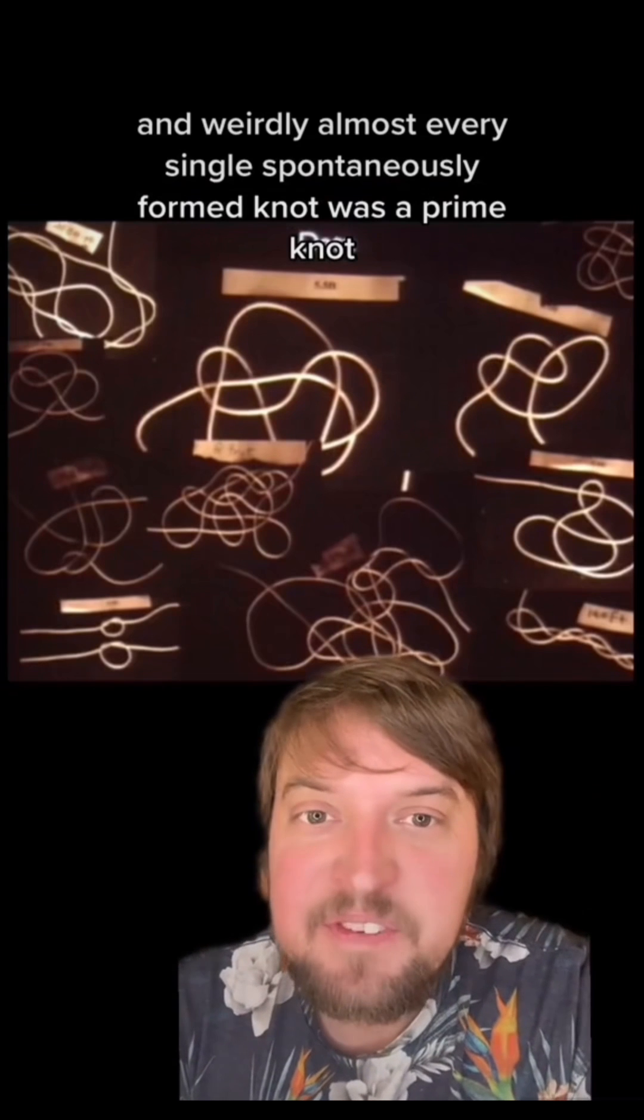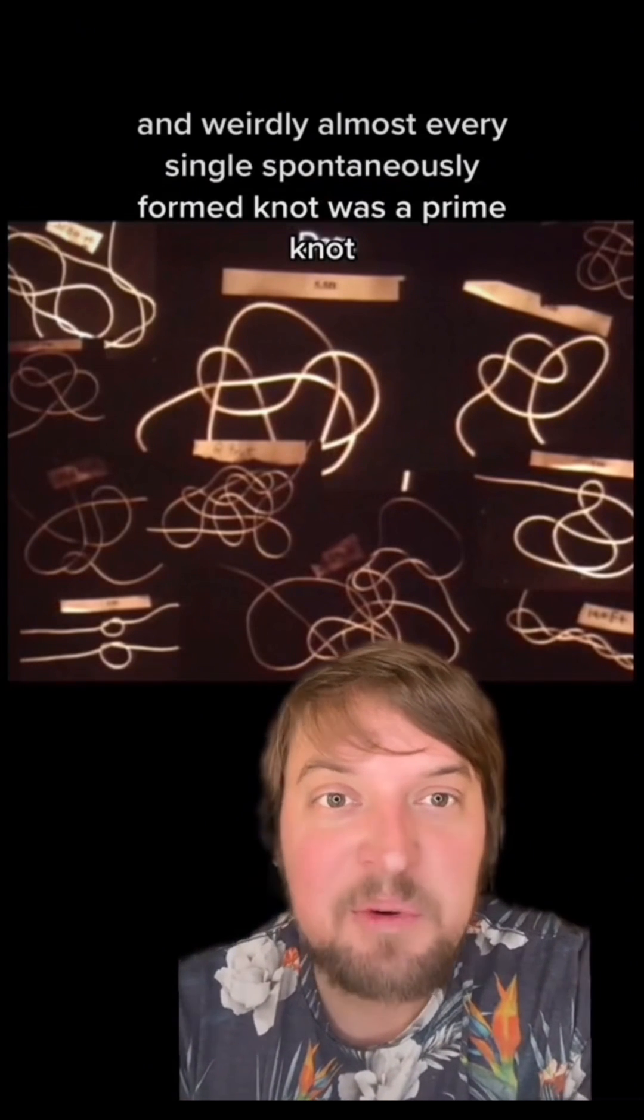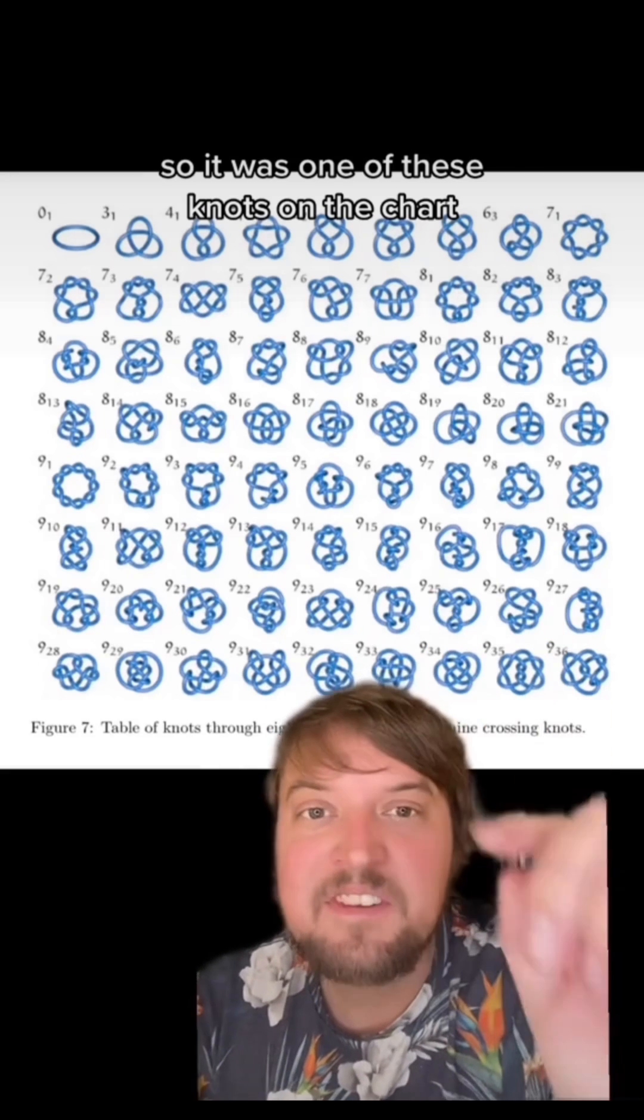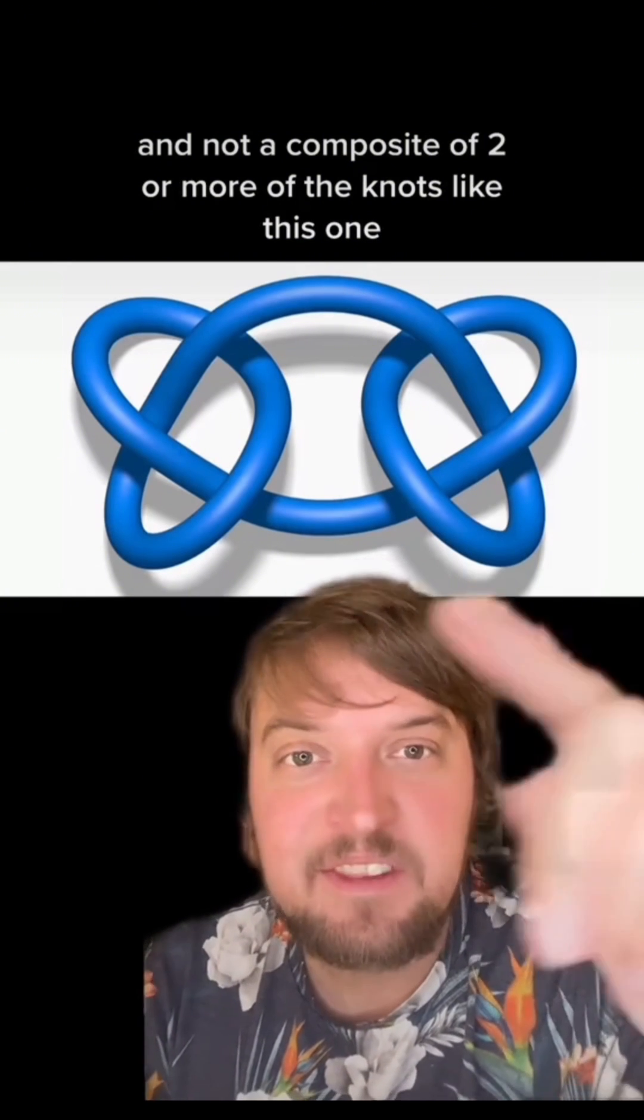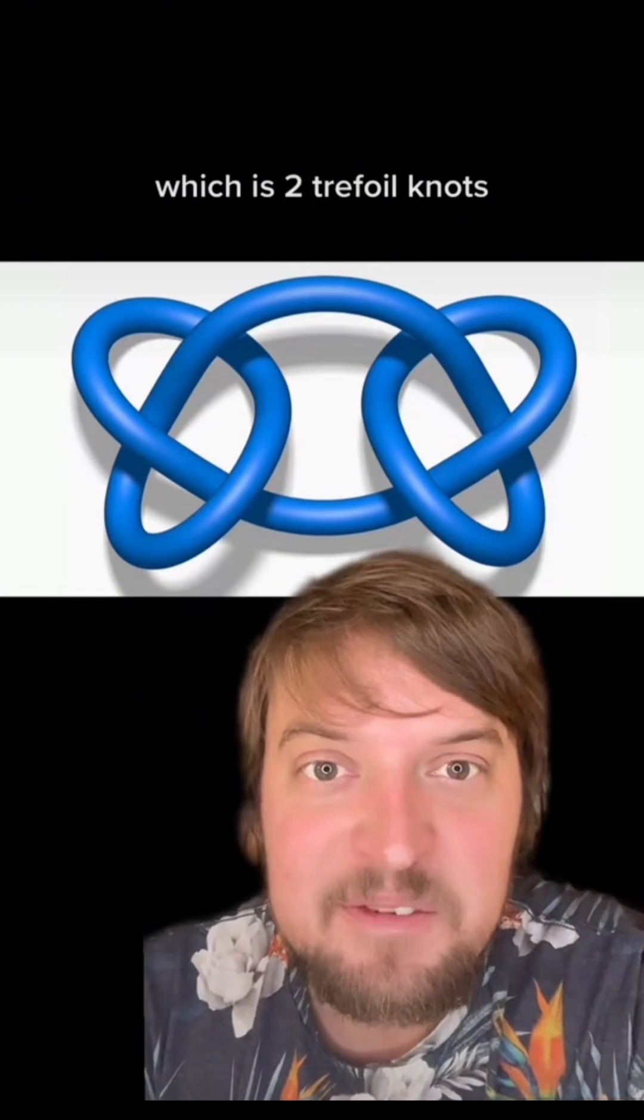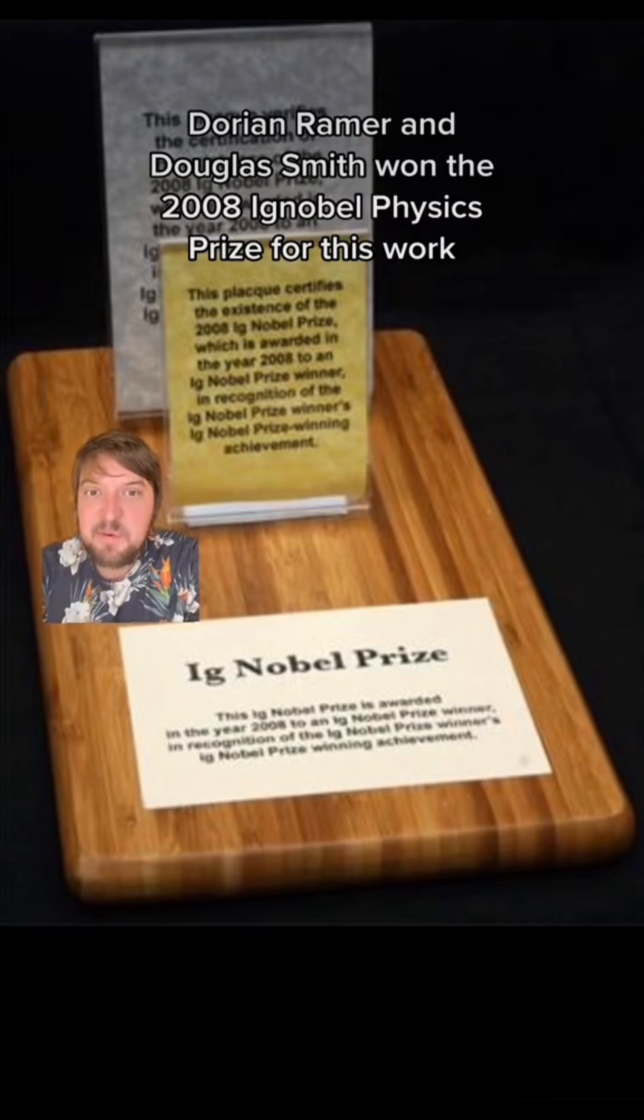And weirdly, almost every single spontaneously formed knot was a prime knot. So it was one of these knots on the chart, and not a composite of two or more knots, like this one which is two trefoil knots. Dorian Raymer and Douglas Smith won the 2008 Ig Nobel Physics Prize for this work.